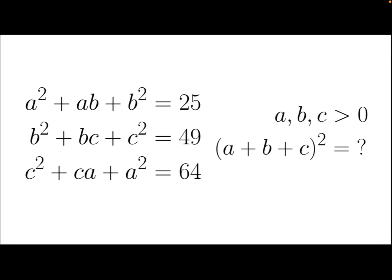Let's take a look at this problem. We have positive real numbers a, b, and c, such that a squared plus ab plus b squared equals 25, b squared plus bc plus c squared equals 49, c squared plus ca plus a squared equals 64. Find the value of a plus b plus c all squared.